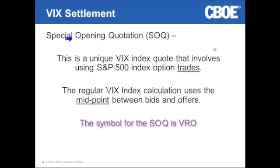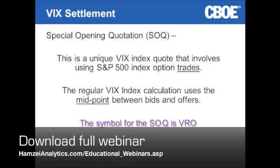The special opening quotation is what we refer to when we have an AM settlement product. We have a special opening quotation for S&P 500 SPX option contracts, which are AM settled, and we also have a special opening quotation for the VIX. The symbol for the VIX special opening quotation is VRO. About mid-morning on Wednesday, December 21st, if you have VRO on your screen, that number will change from the November expiration price to the December expiration price. We take those opening prices from the S&P 500 index options, put them into the same formula used to determine the VIX, and come up with a VIX settlement price — it usually comes out maybe an hour or two after the market has opened, depending on how volatile the market is.